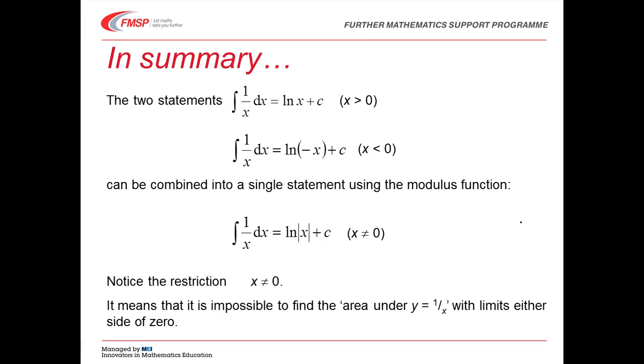So when x is negative, the indefinite integral of 1 over x is log of minus x. These two statements can be combined into one statement using the modulus function. The integral of 1 over x is the natural log of the modulus of x. So if x is negative, we just use the positive value. Note the restriction. x is not allowed to be equal to 0. So we're not allowed to try and find the area under y equals 1 over x with limits on either side of 0.